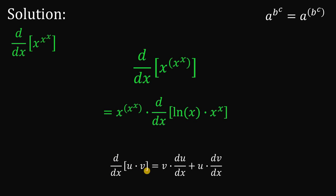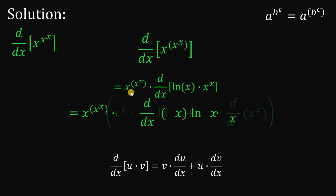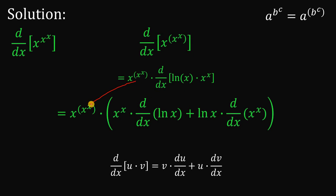The product rule states that the derivative of u times v equals the second function times the derivative of the first, plus the first function times the derivative of the second. Now let's apply this product rule to the derivative of ln of x times x raised to the power of x. We get: copy x raised to x raised to x, then multiply by the quantity of the second function times the derivative of the first, plus the first function times the derivative of the second.